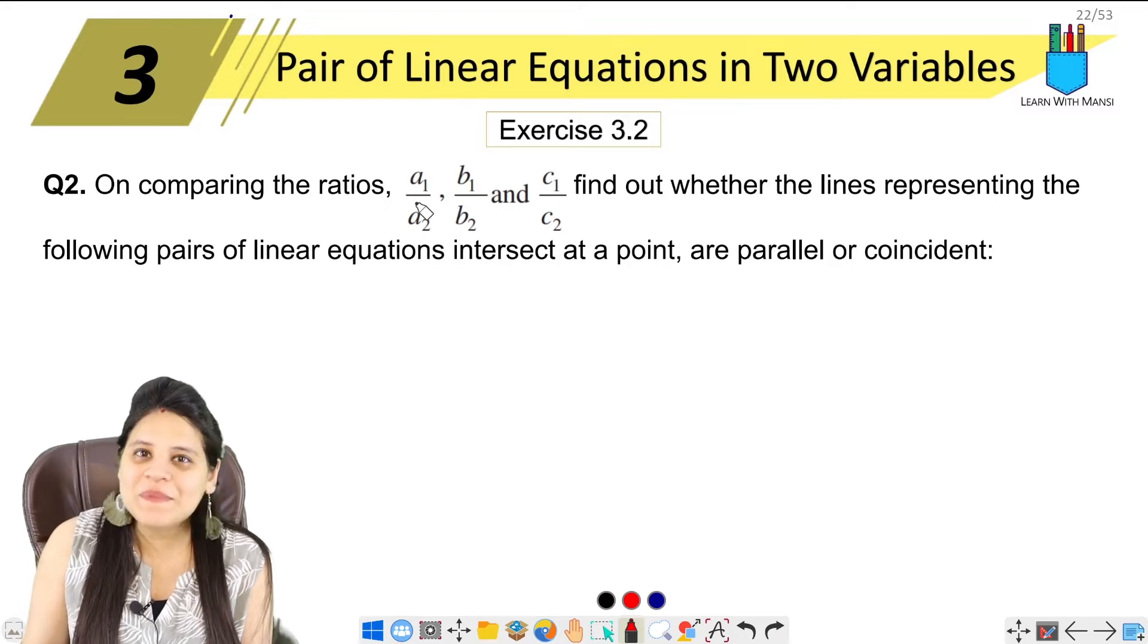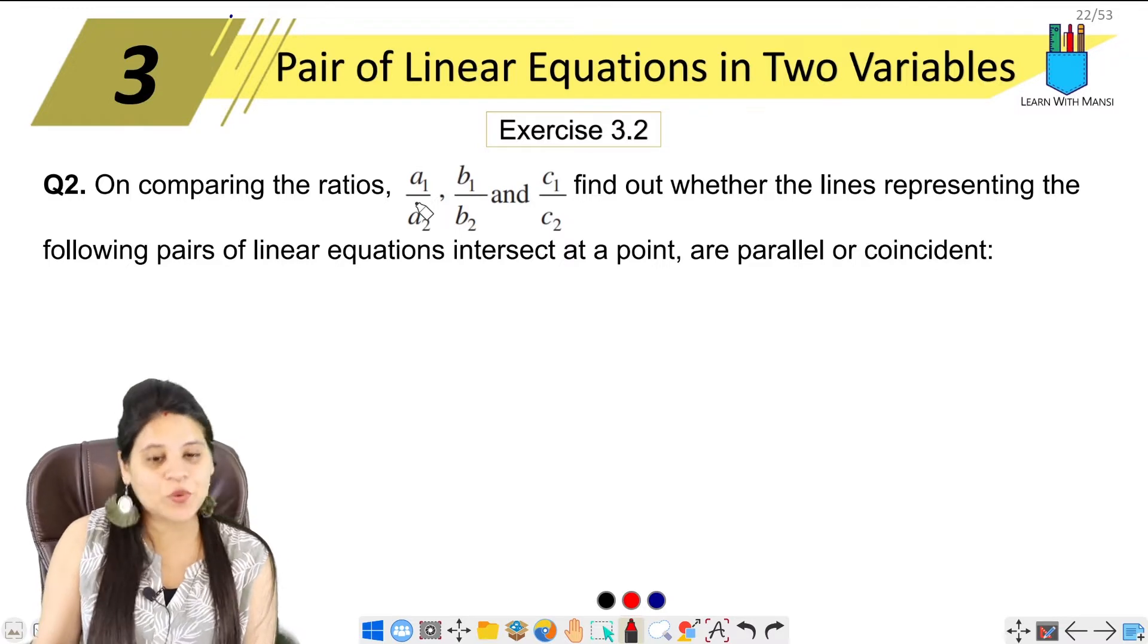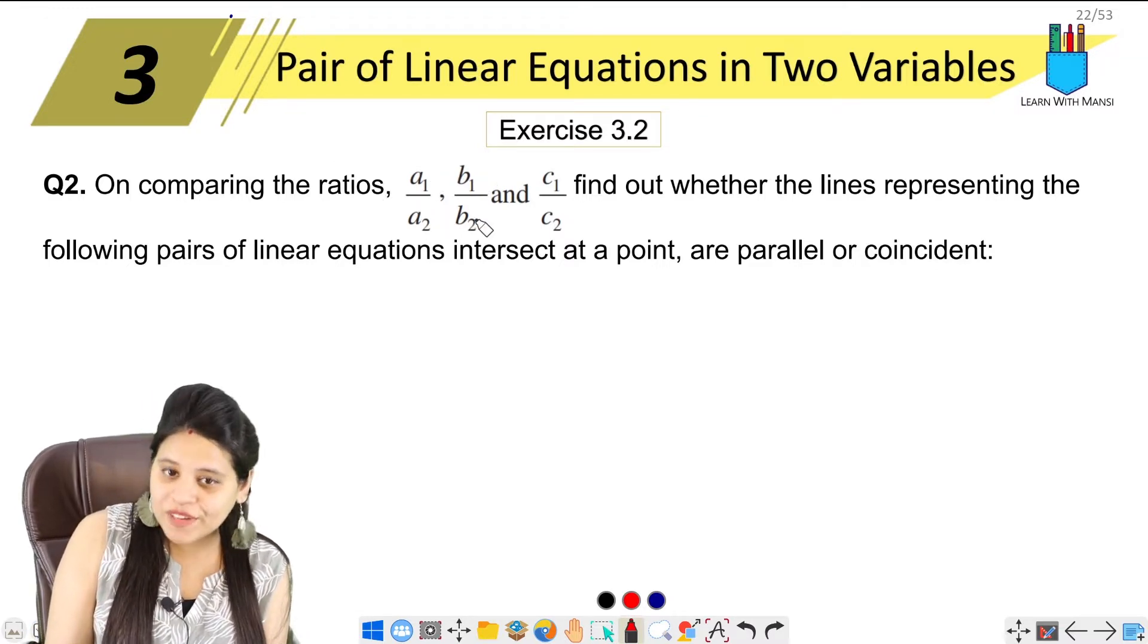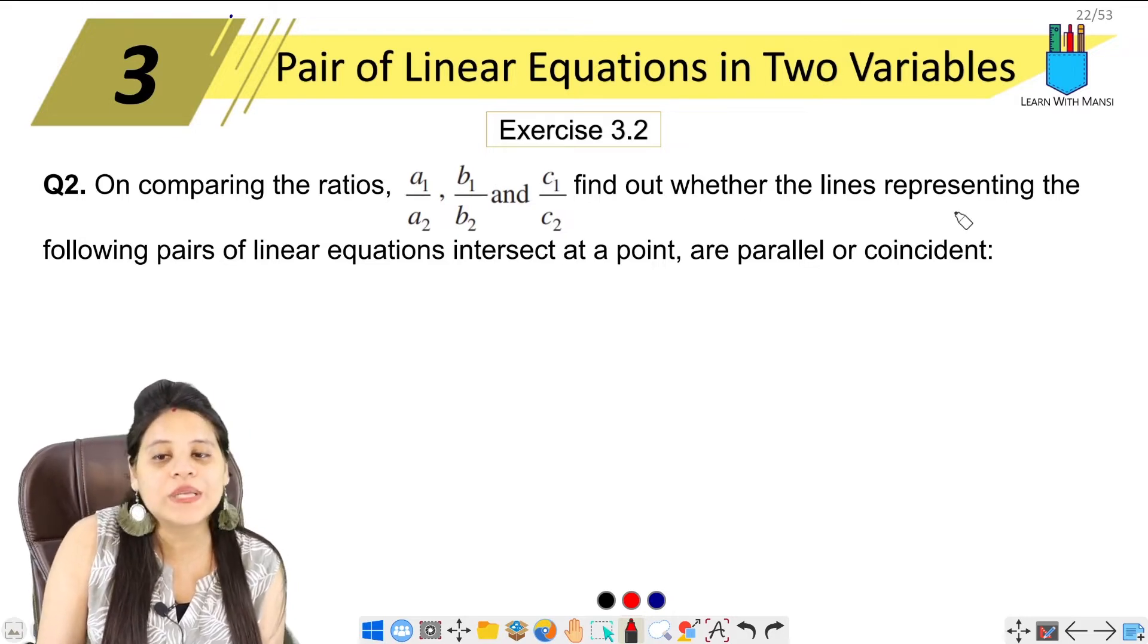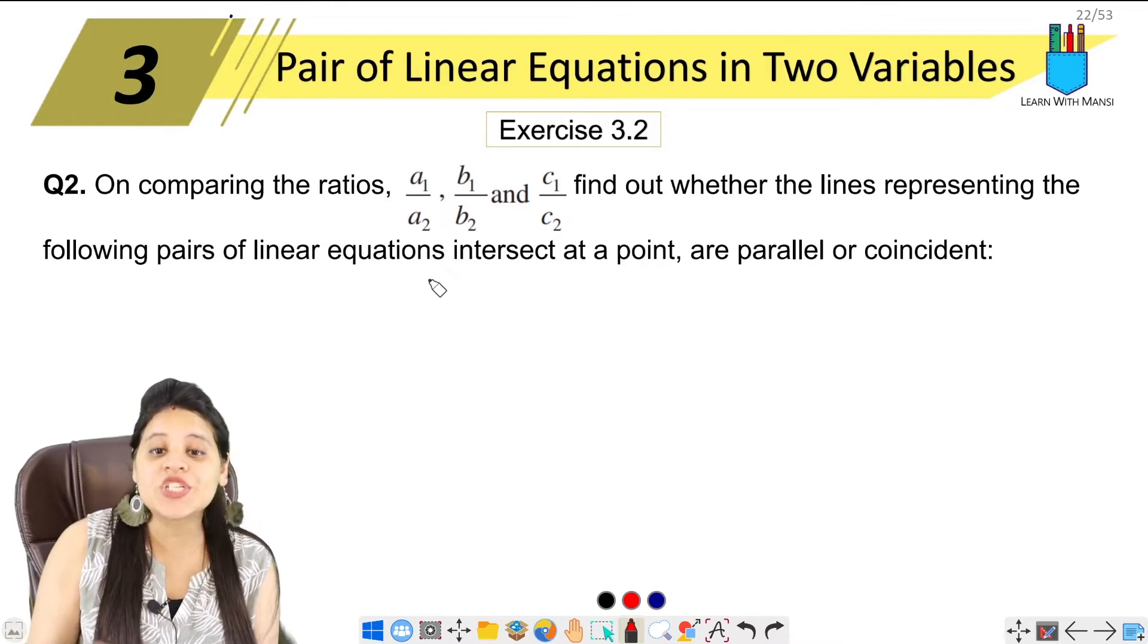Hello everyone, this is Mansi. Welcome back to the channel. So now we are going to start with question number 2 of exercise 3.2. On comparing the ratios a₁ upon a₂, b₁ upon b₂, and c₁ upon c₂, find out whether the lines representing the following pairs of linear equations intersect, are parallel, or coincident.